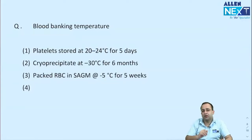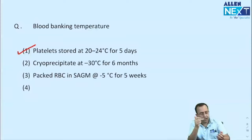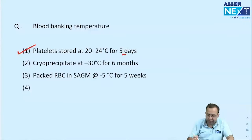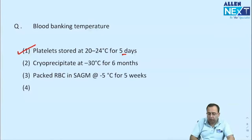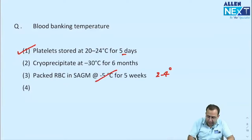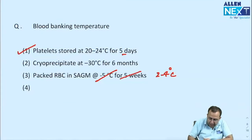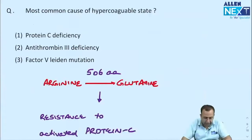Blood banking question: which is true about platelet storage? Platelets stored at room temperature (22–24°C) have a shelf life of 5 days. Cryoprecipitate is stored at minus 30°C with a shelf life of 1 year. Packed RBCs are stored cold at 2–4°C (not frozen) — shelf life 35 days using CPDA, or 42 days with SAGM. The most commonly used preservative is CPDA with 35-day shelf life.